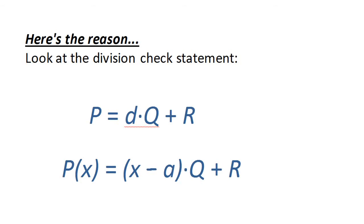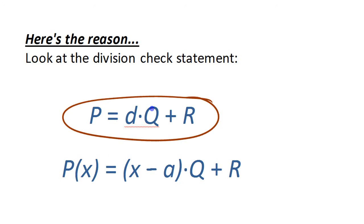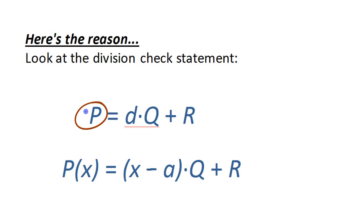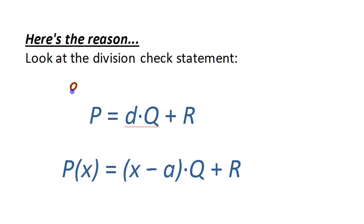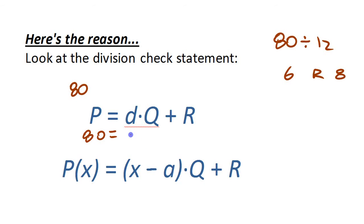Let's quickly look at why this works. This is just the division check statement: the dividend equals the divisor times the quotient plus the remainder. With numbers, for example, if you divided 80 by 12 you'd get 6 with a remainder of 8. So 80 equals 12 times 6 plus 8. That statement works for polynomials — for anything.